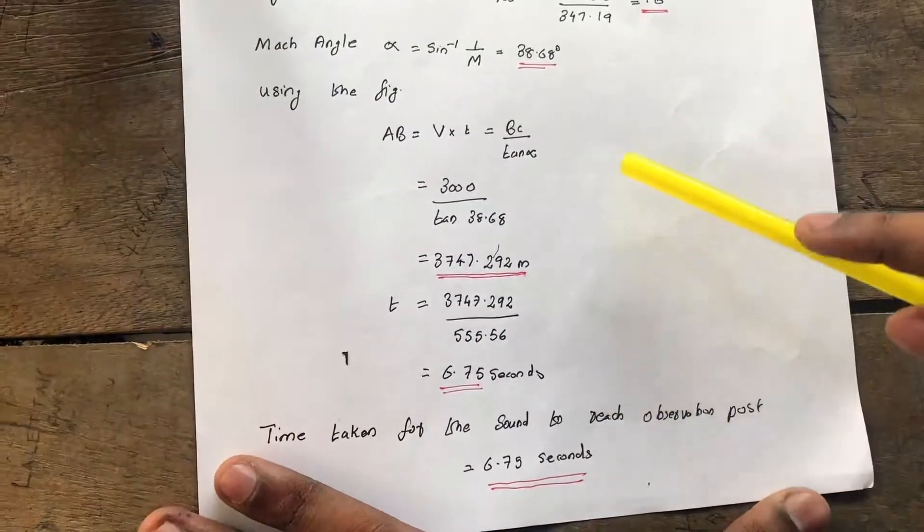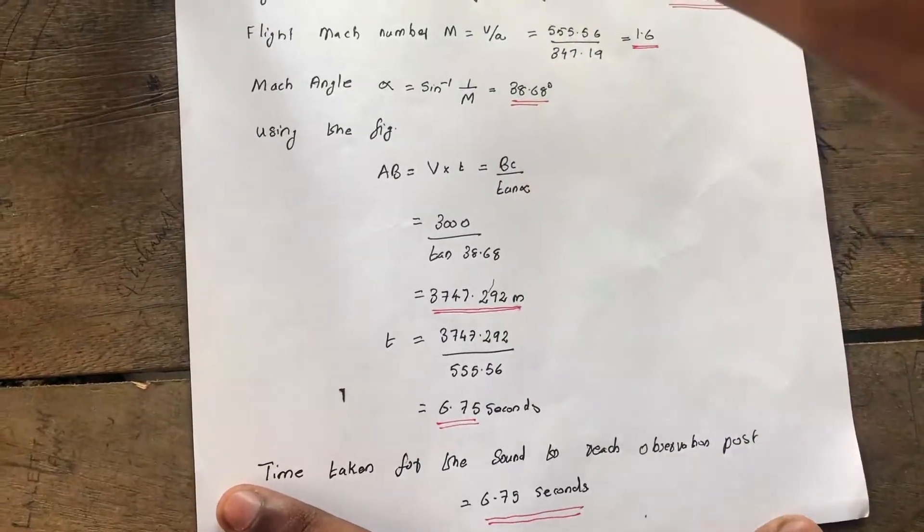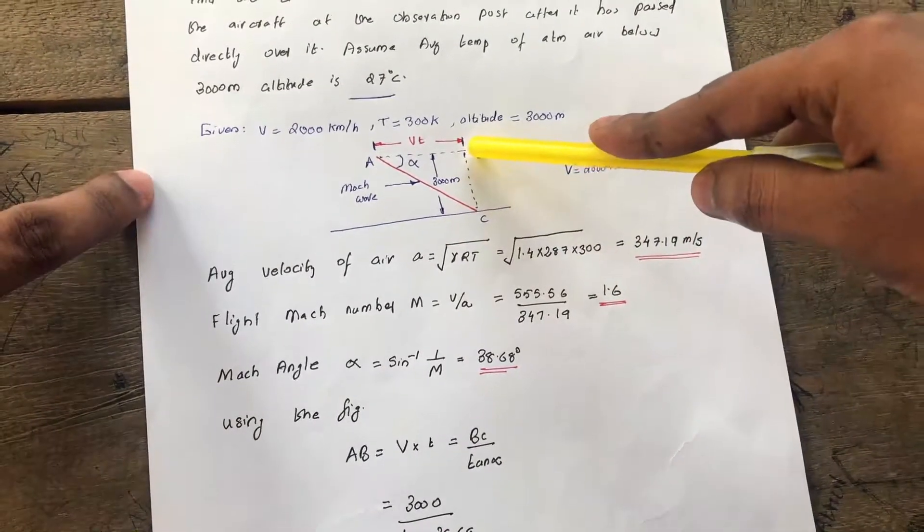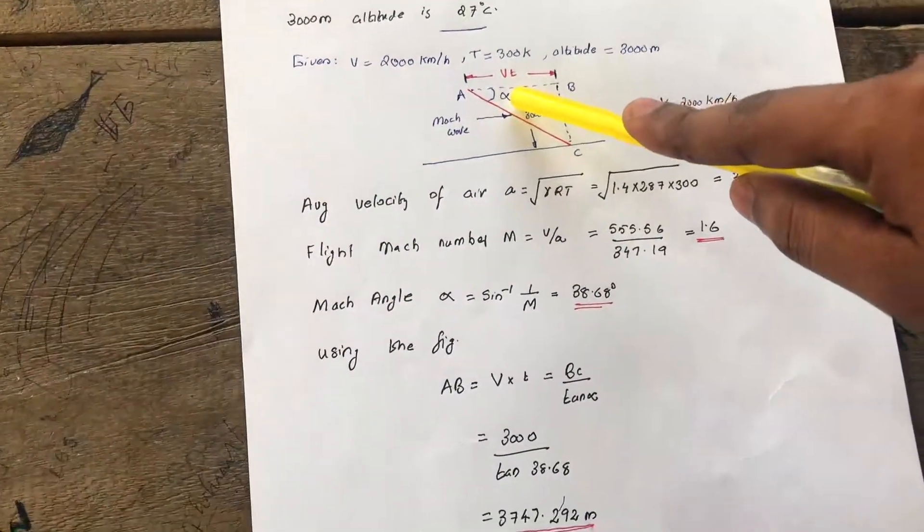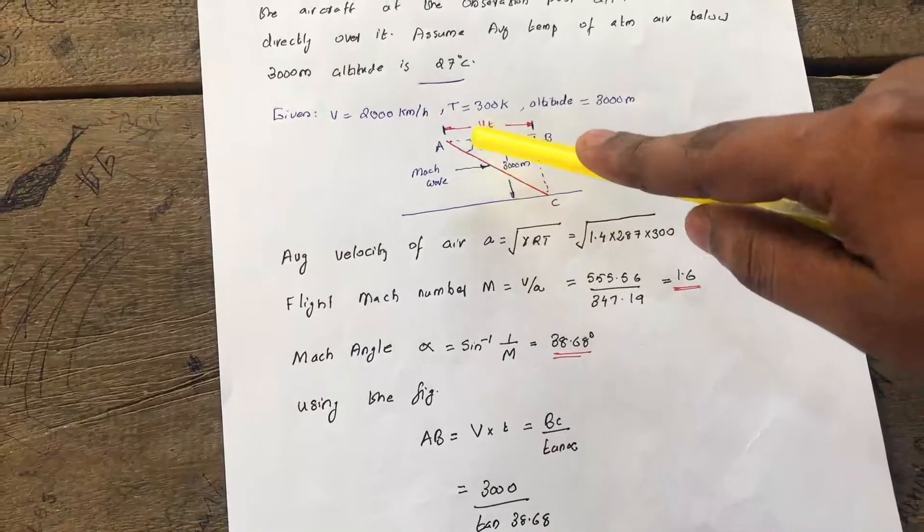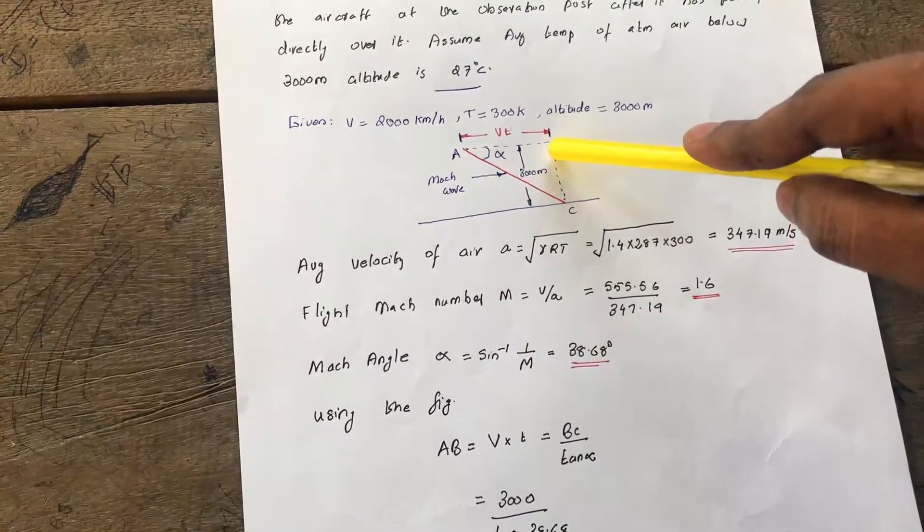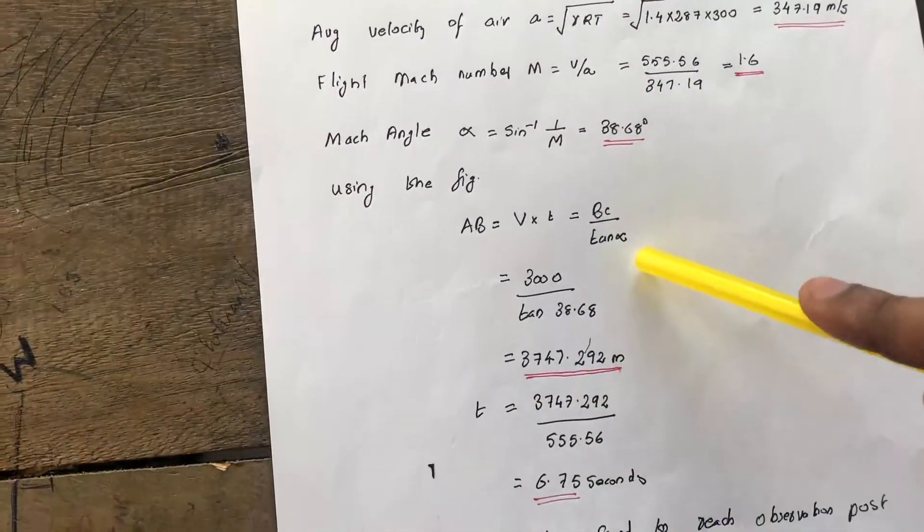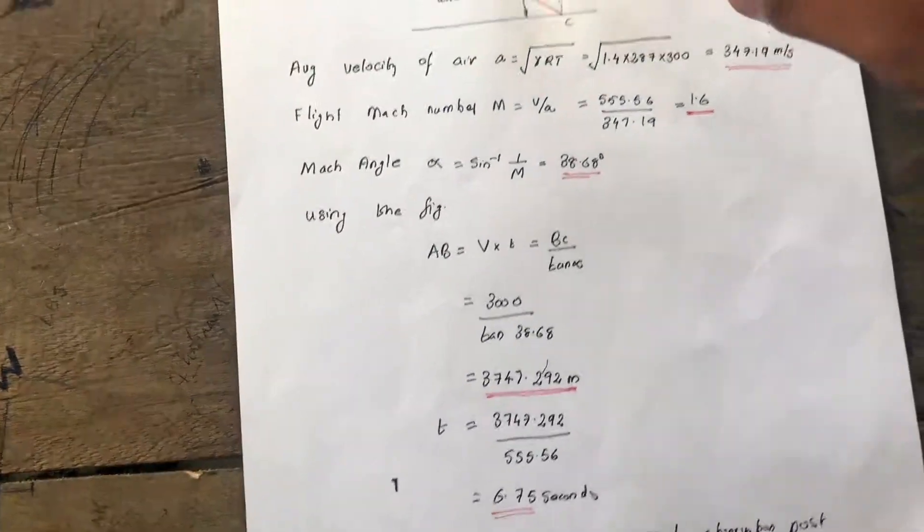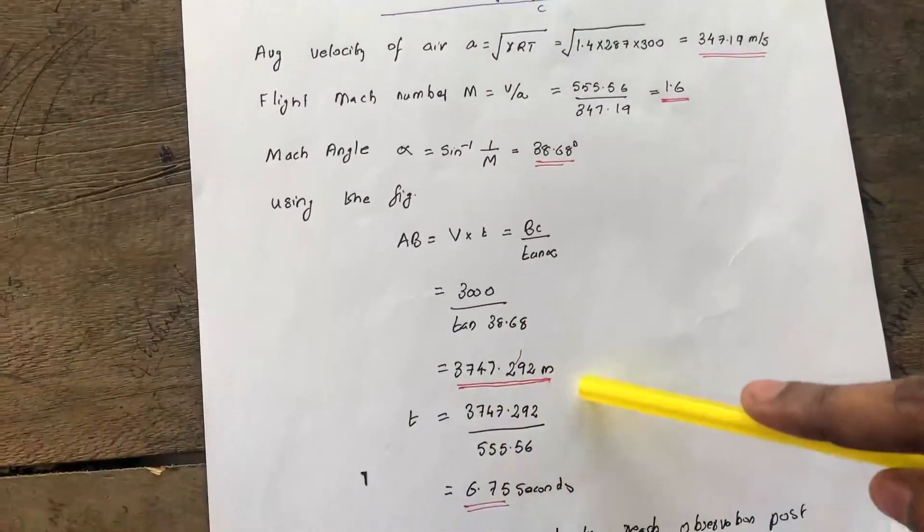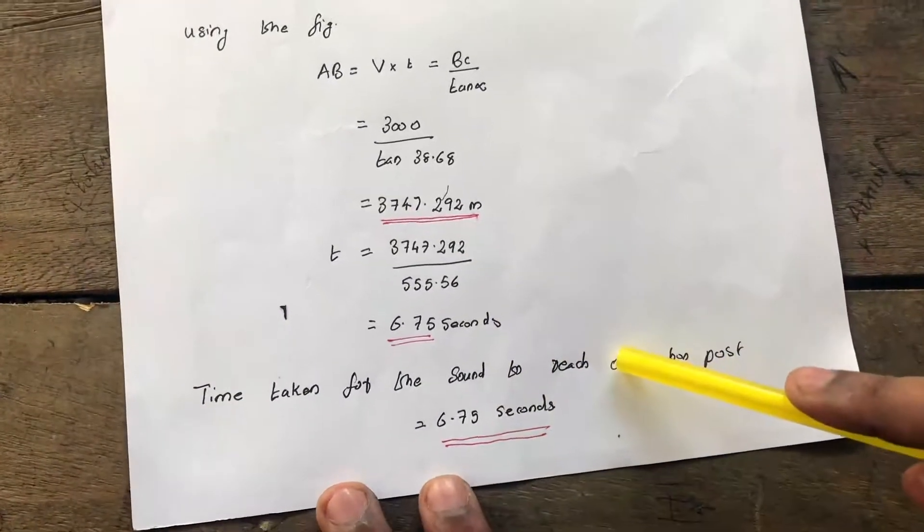We know from the figure, AB equals BC by tan alpha. Tan alpha equals BC by AB. From that we can find AB equals BC by tan alpha. We also know that AB equals V into t. So as we substitute, we get the value of time at 6.75 seconds.